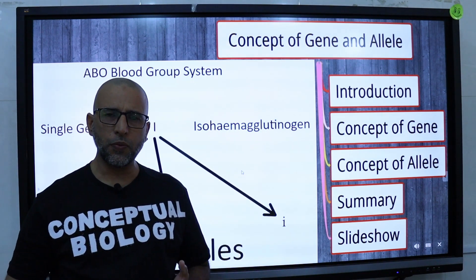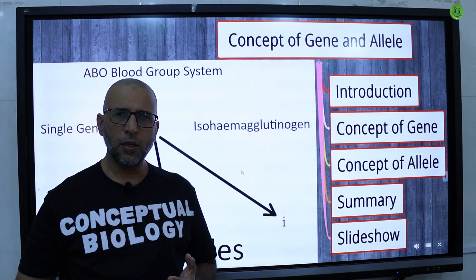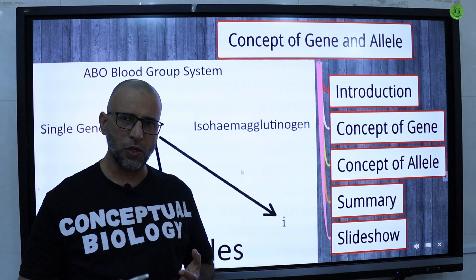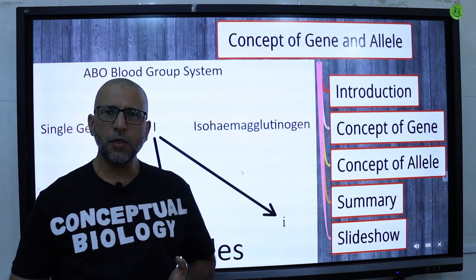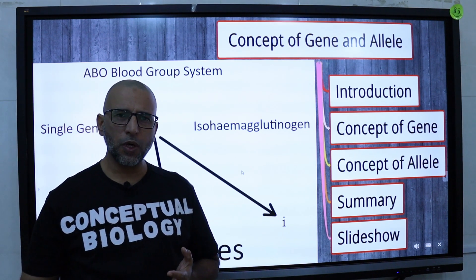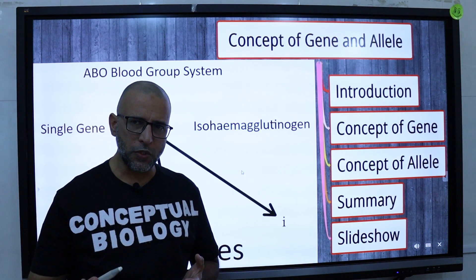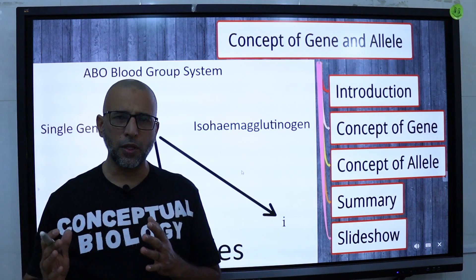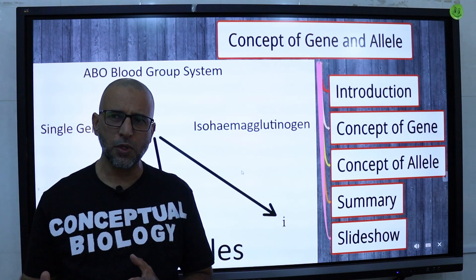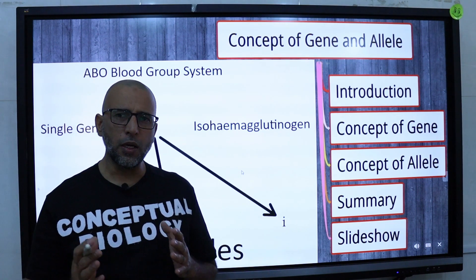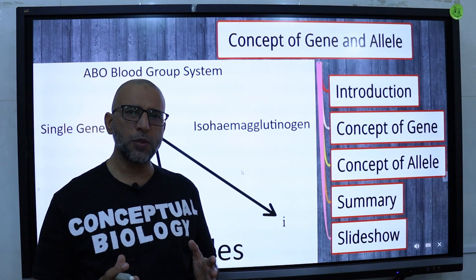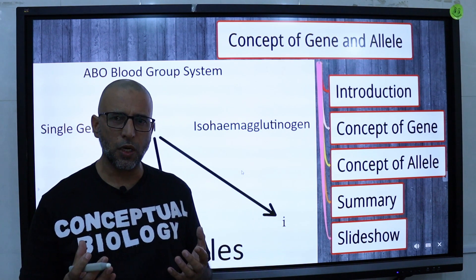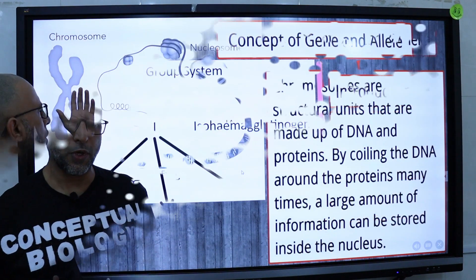A gene is a portion of DNA that determines a certain trait, and an allele is a specific form of a gene. Genes are responsible for the expression of traits. Alleles are responsible for the variations in which a given trait can be expressed.